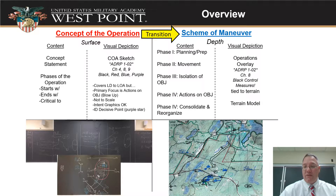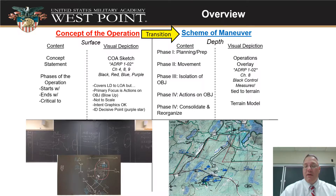Not just that there are phases, but every phase going into depth with detail — what happens in that phase — and then go to the next phase and deep dive into that, and so on. And visually for this, we're going to use an operations overlay. The operations overlay is tied to the terrain; things are actually in the right spots by grid coordinate on the map, precisely where we want them. When we brief it, we can use the overlay or we can use a terrain model to show how things are going.